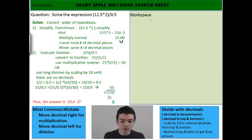The question says, solve the expression 12.25 times 2 divided by 0.5. So if we use our correct order of operations with PEMDAS, we know that everything in the parentheses comes first.